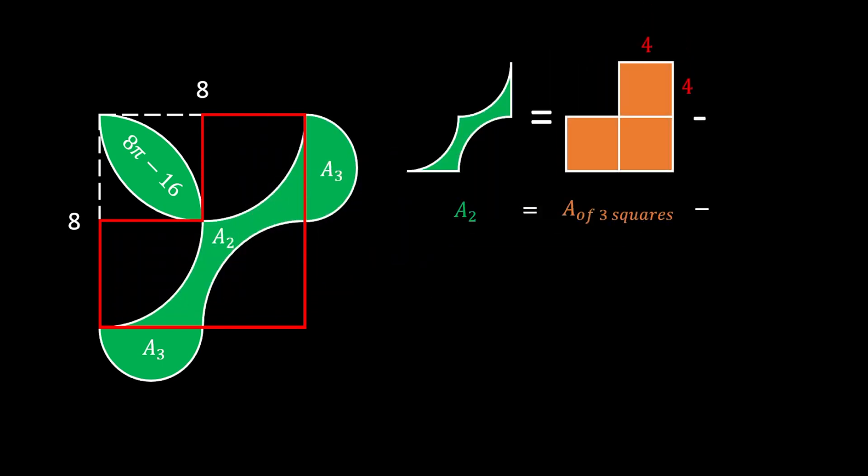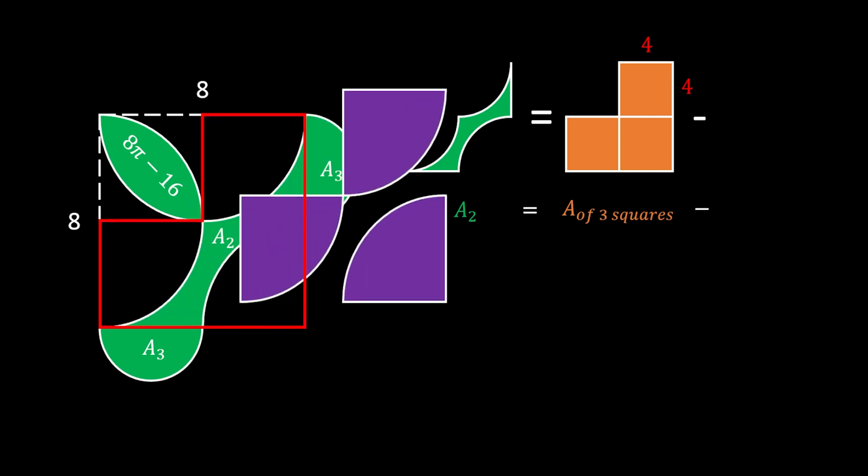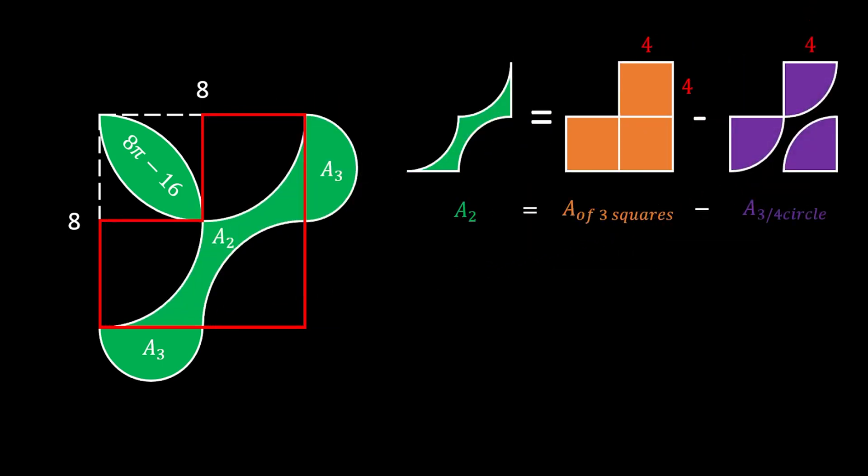First, we will find the area of these three squares, which is equal to 3 times the square of the side. That is 3 times 4², and that is 48.